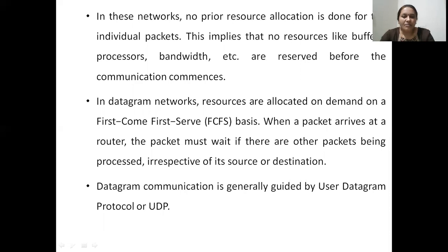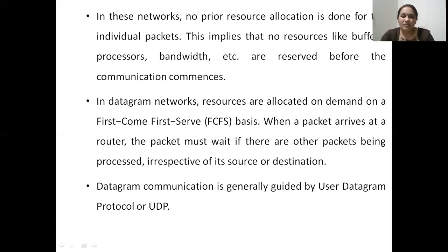Data communication in datagram networks is generally guided by the User Datagram Protocol, or UDP, which operates on the transport layer. UDP assists this datagram communication. As we know, UDP is a connectionless protocol, and datagram networks are also connectionless networks — they never have a dedicated path of communication between two nodes. Whichever path is available between source and destination through intermediate nodes will be taken, and the availability of these paths dynamically keeps changing in the network depending on data traffic.